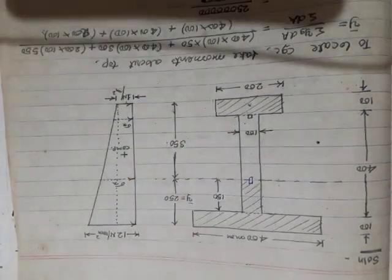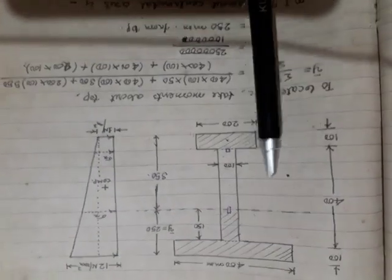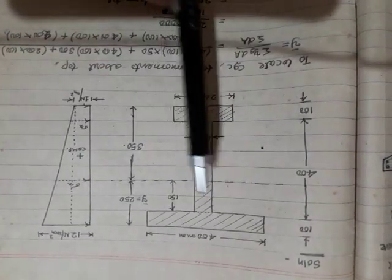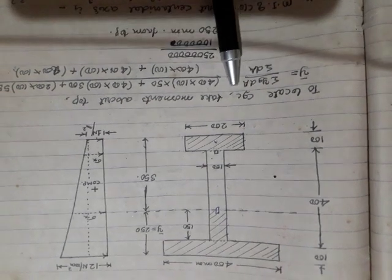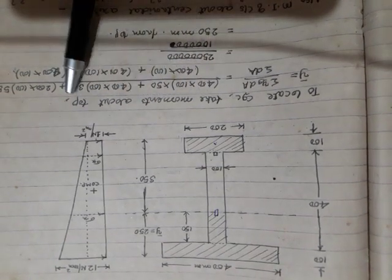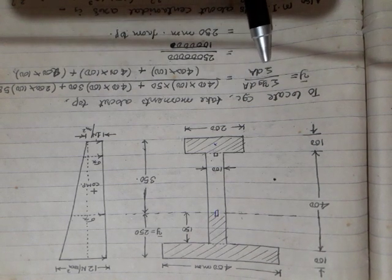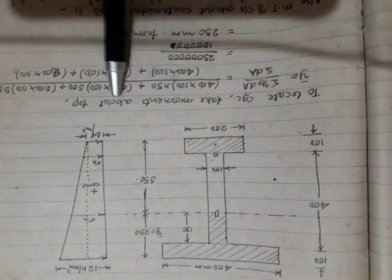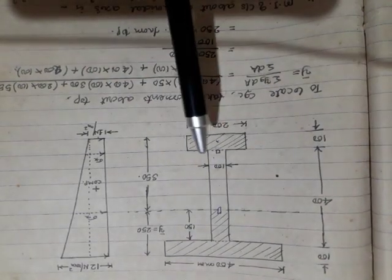Since the given section is an unsymmetrical I-section, first of all we need to find and locate the CGC. To locate the CGC, y-bar is equal to Σ(y·dA) divided by Σ(dA). We will take moments about the top of the section.